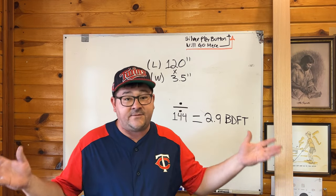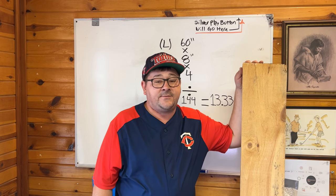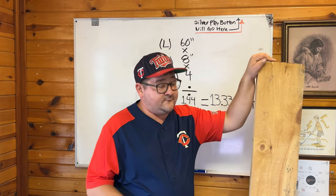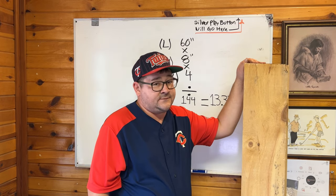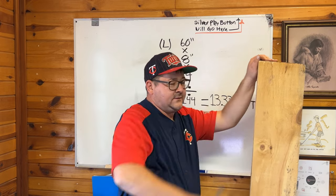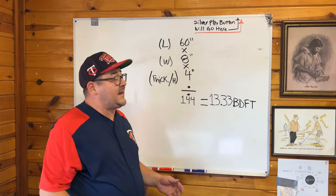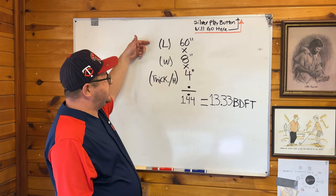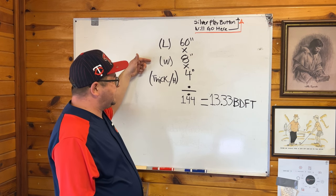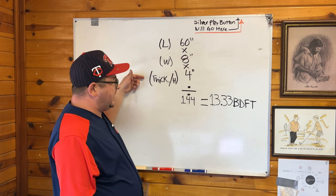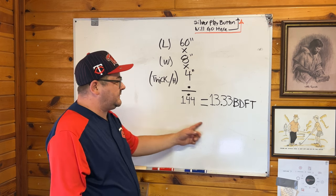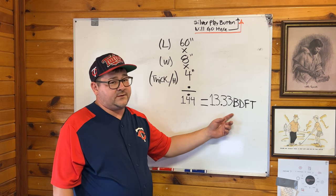Now let's try something thicker. What do we do with boards that are thicker than one inch? Here we have a piece of white pine that is very mantle-worthy, by the way. It is 60 inches long, roughly 8 inches wide, and 4 inches thick. Doing our math: 60 inches times 8 inches times 4 inches divided by 144 gives us 13.33 board feet.